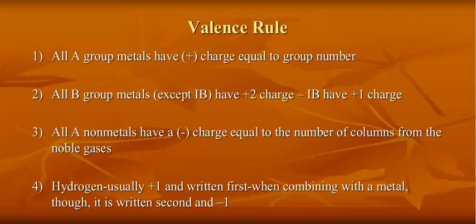So how do we get the charges? We can follow the valence rule, and I've got four points here for the valence rule. All A group metals have a positive charge equal to the group number. For example, if I'm in group 1A and it's a metal, it's going to have a charge of plus 1. If it's a metal in group 4A, it's going to have a charge of plus 4.